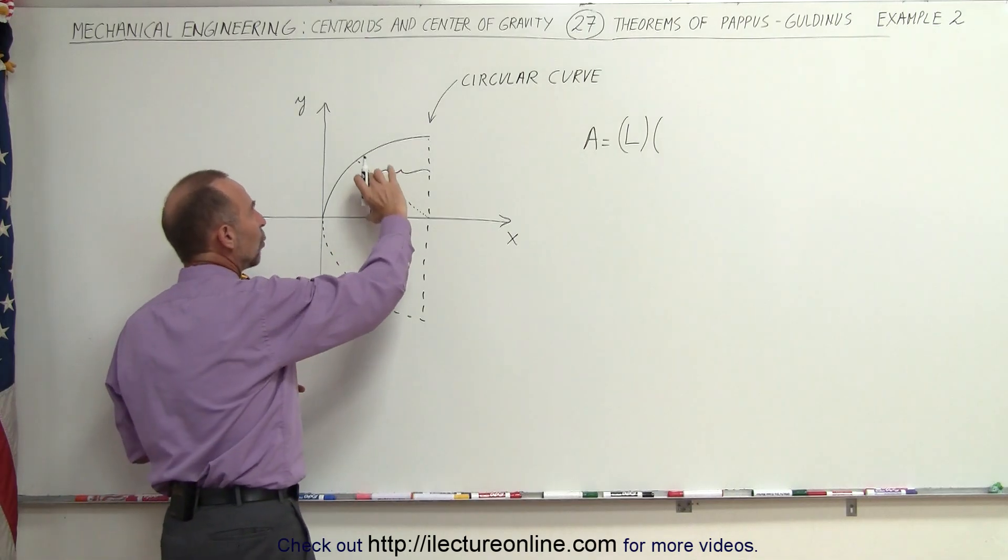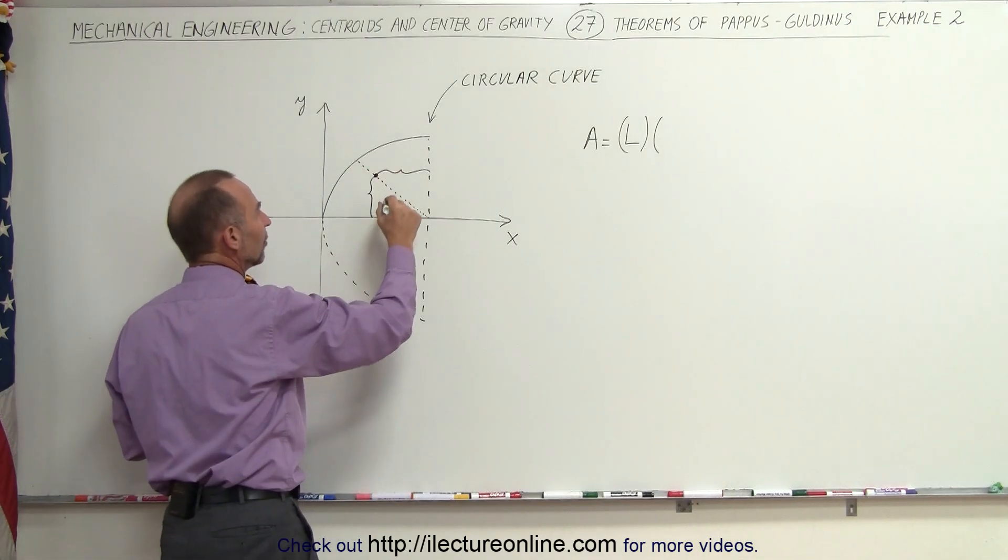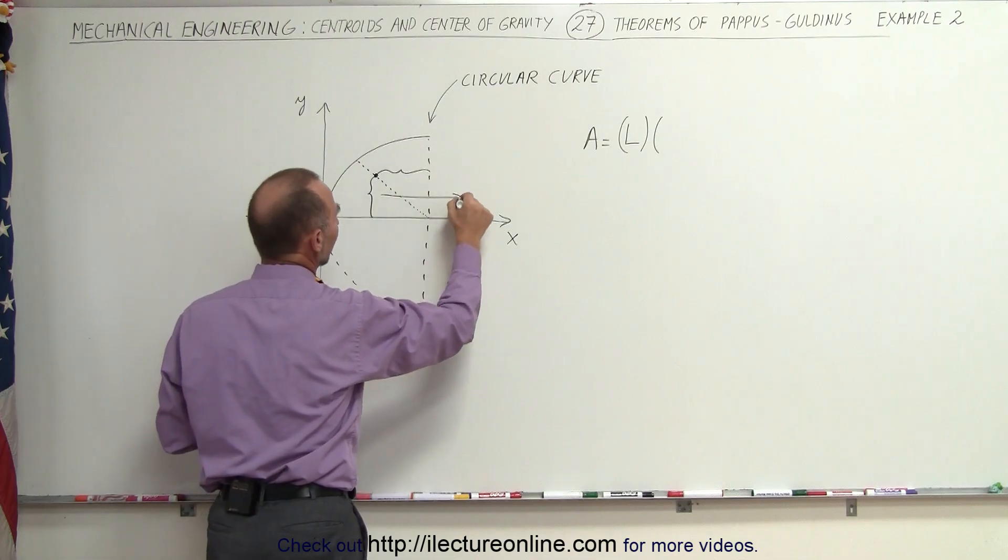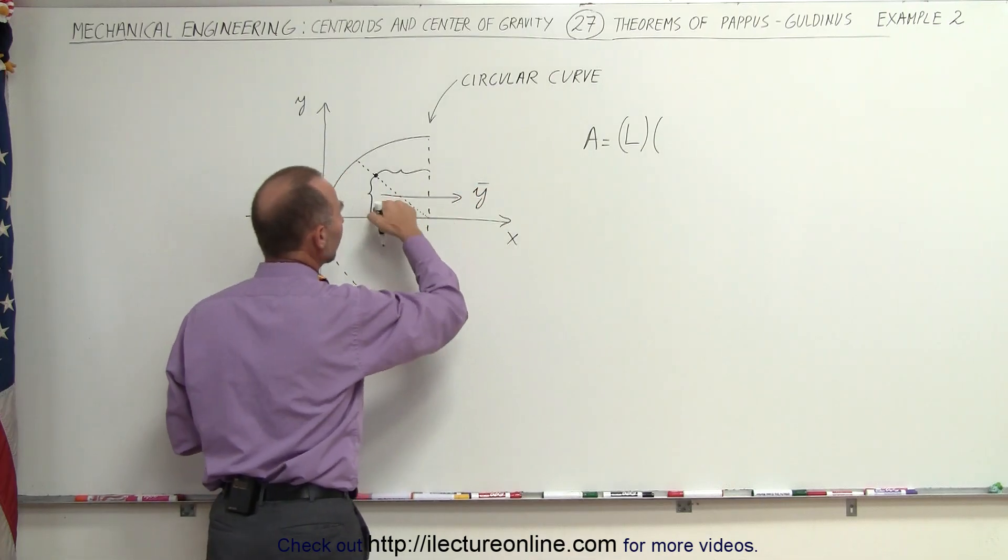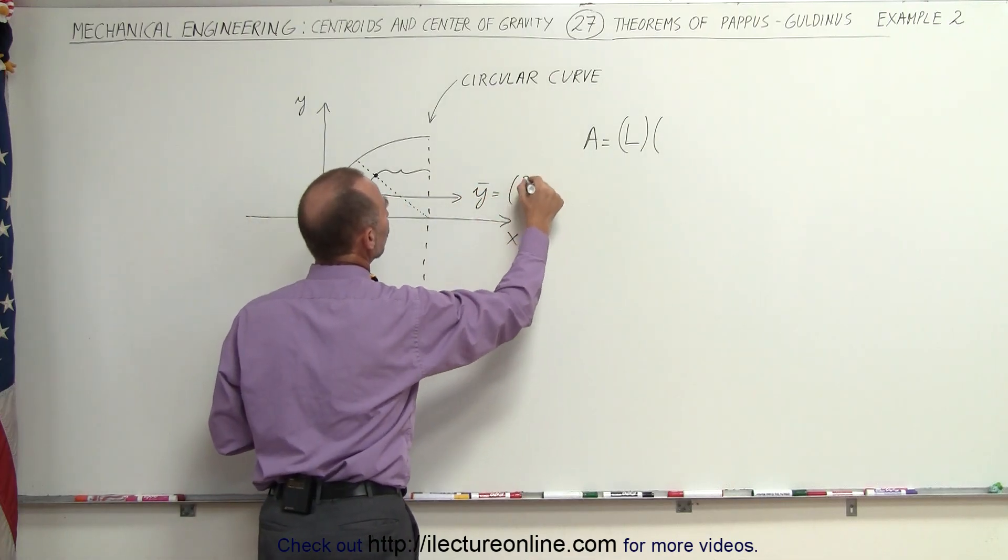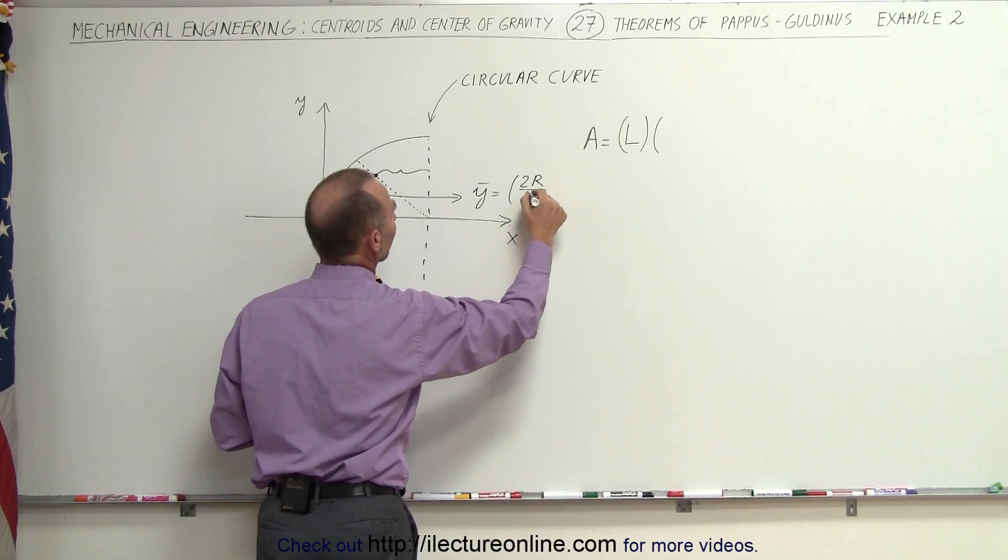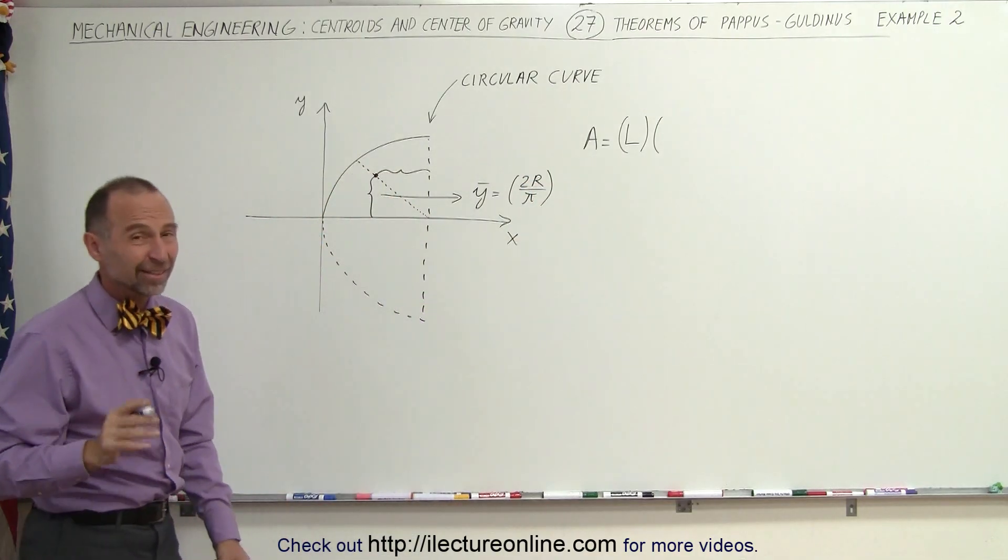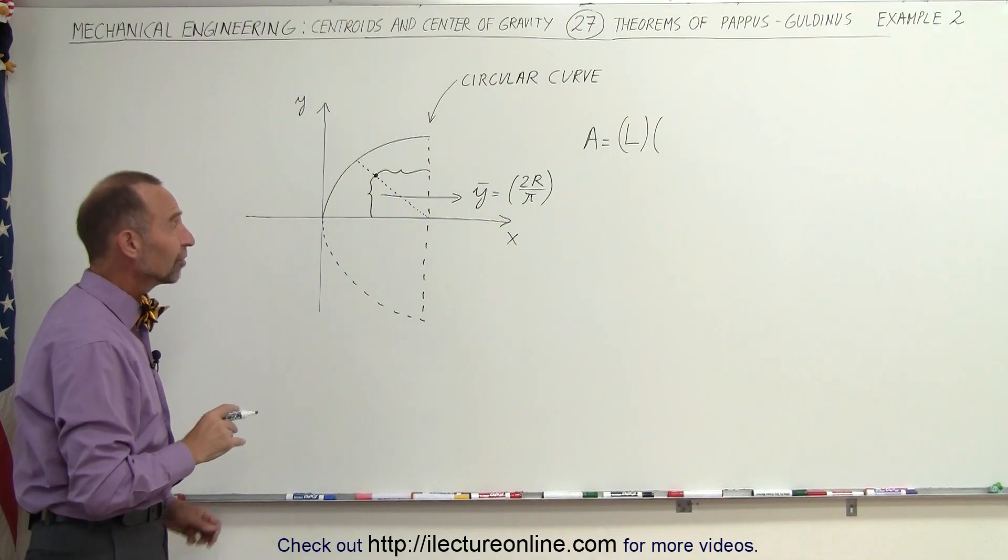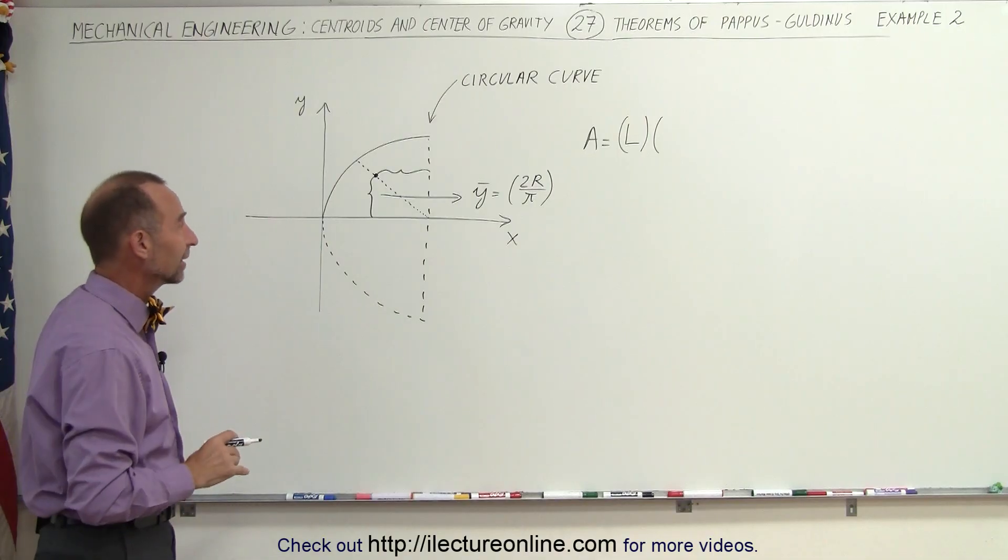We're only interested in the y-coordinate, we're only interested in that distance. It turns out that the y-coordinate of the centroid is equal to 2 times the radius of that circle divided by pi. It's nice to remember those things, the centroids of certain shapes like that.